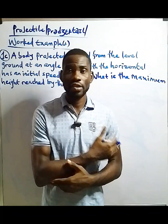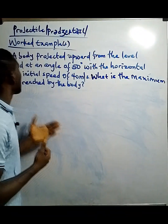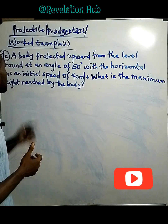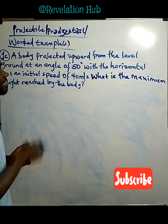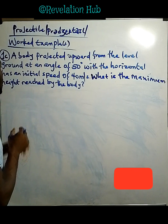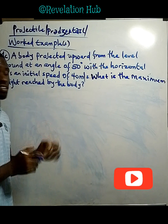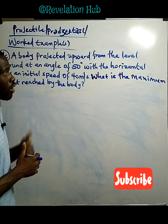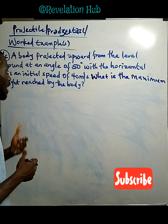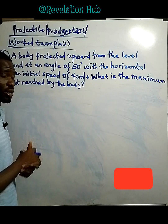Let's look at example 1c. A body projected upward from the level ground at an angle of 50 degrees with the horizontal has an initial speed of 40 meters per second. What is the maximum height reached by the body?